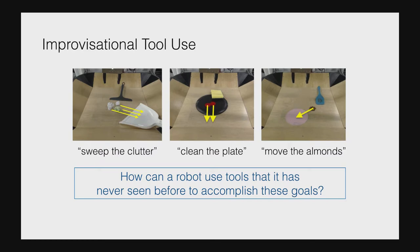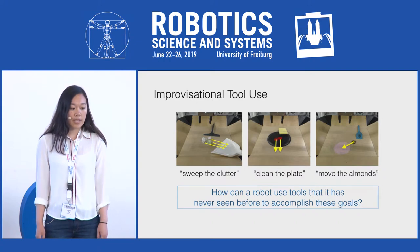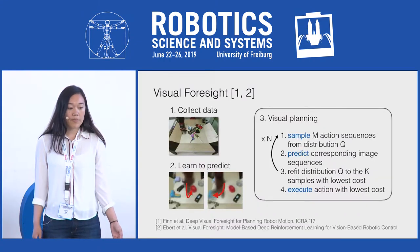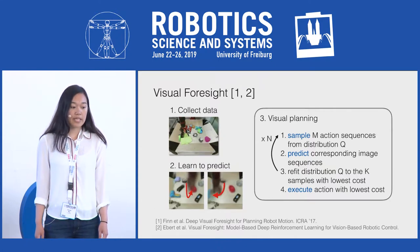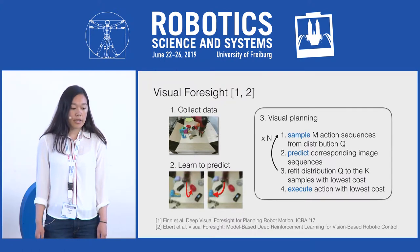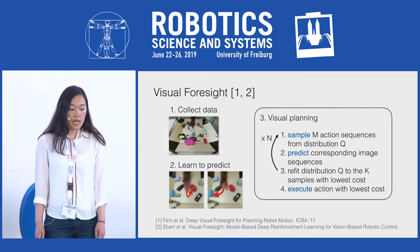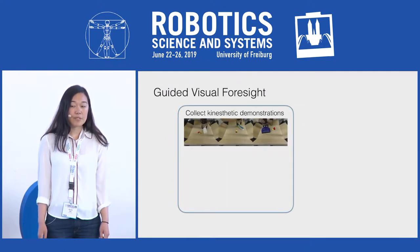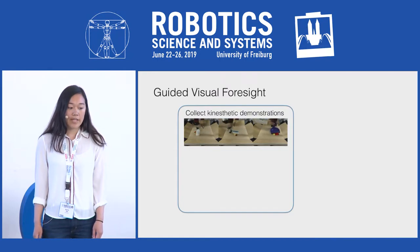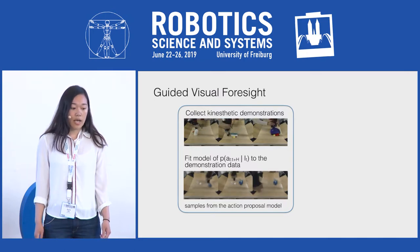We study this in the context of robotic tool use — for example, when presented with a scene, how can a robot realize to use a sweeper it has never seen before to move clutter onto a dustpan? We build upon the visual foresight framework, in which a visual predictive model is learned from unsupervised interactions. However, for more complex interactions, unsupervised experience is not enough, so we inject guidance in the form of diverse multi-task demonstrations and fit an action proposal model that outputs actions encouraging multi-object interaction.